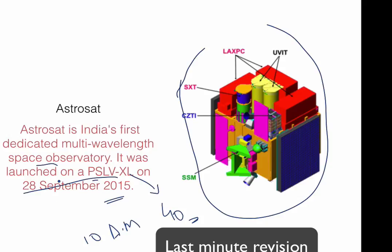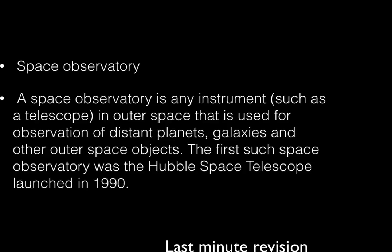What is a space observatory? A space observatory is an instrument — it is like a telescope — which is placed in outer space and is used for observation of distant planets, galaxies, and other outer space objects. It works just like a telescope on land, but is placed in space for the study of distant planets, galaxies, and outer space objects.